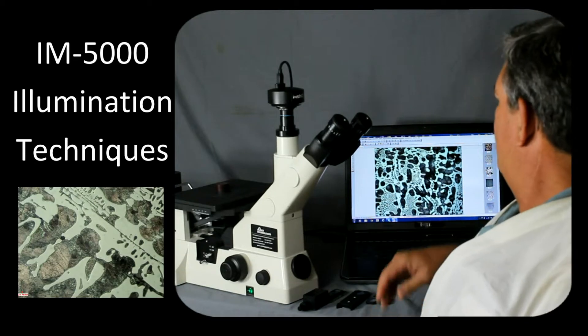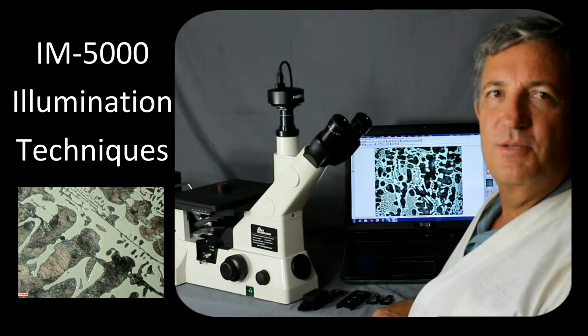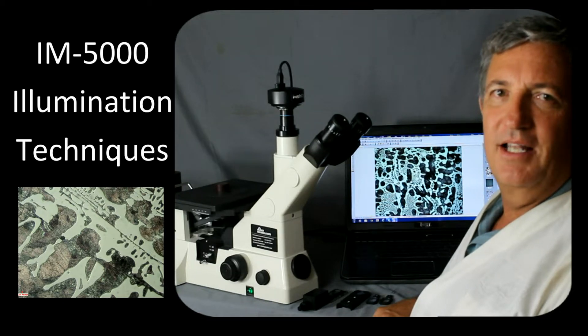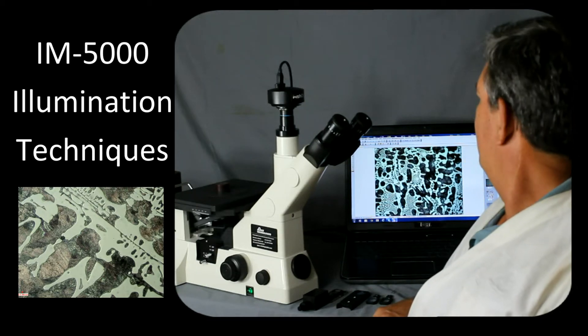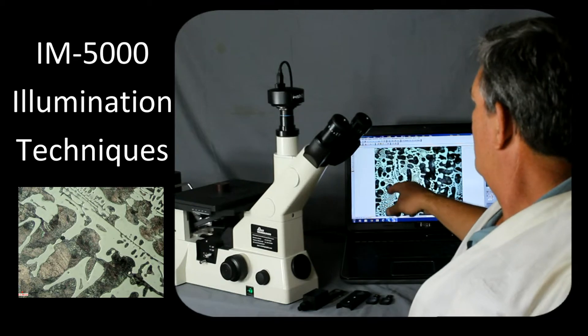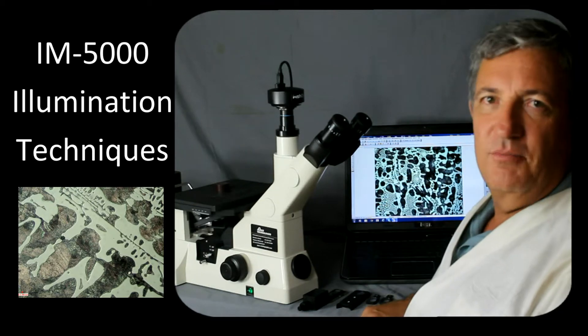The image that's shown on this screen here is bright field illumination, which is the most common illumination technique in metallography. The background will be light and the features will be dark in bright field illumination.